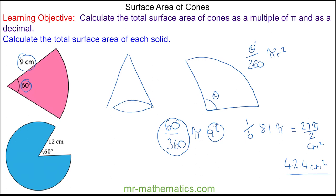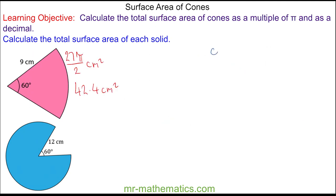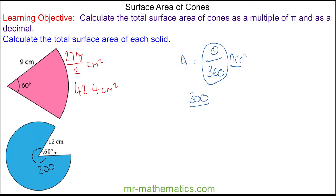Now, can you work out the curved surface area of a cone from this blue sector? You can pause the video and resume when you're ready. So again, the area of the sector is theta over 360 times pi r squared — this fraction of the entire circle. We know the missing angle is 60 degrees, so the angle of the sector is 360 minus 60, which is 300 degrees.